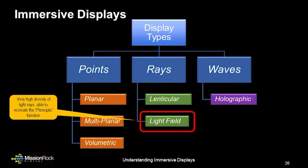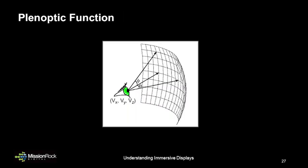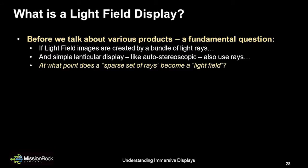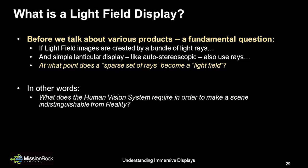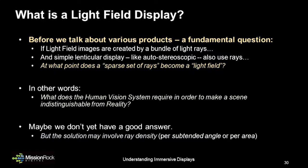Continuing through our display taxonomy, we'll talk about true light field displays, which use a very high density of light rays to recreate the image — or the planoptic function — representing light coming from all directions to the viewer. Before we dig into some examples, you might be wondering: if light field images are created by a bundle of light rays, and a simple lenticular display also uses light rays, at what point does it become a light field? Or, what does the human vision system require in order to make the scene indistinguishable from reality? This is still an area of active research regarding optical designs and the human visual system.